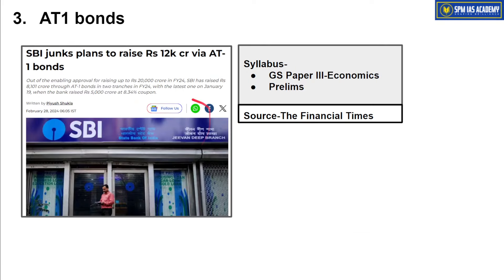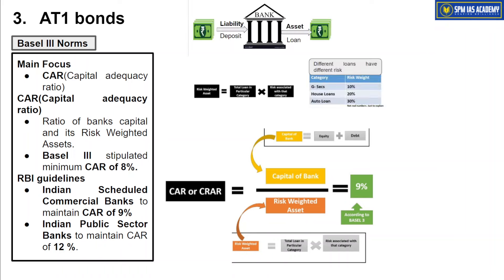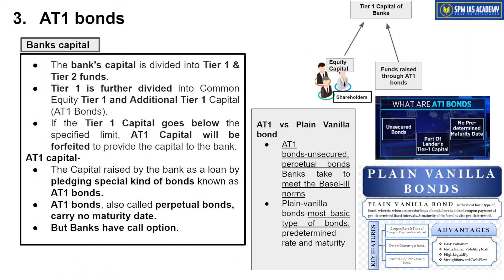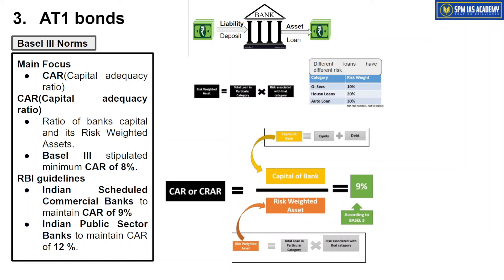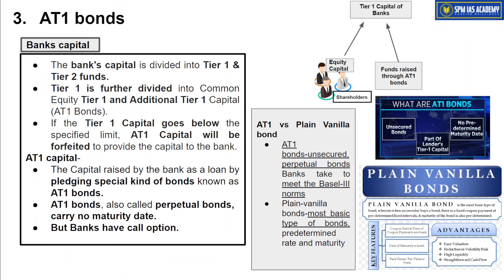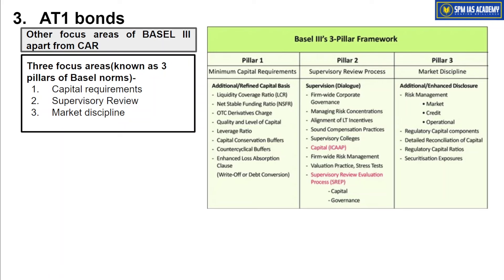Coming back to the current news: SBI had recently planned to raise ₹12,000 crore via AT1 bonds, but has now dropped that plan for the time being. Banks typically consider AT1 bonds or raising money from investors when their capital adequacy ratio targets are in danger of being missed. That is the news — not important from an exam perspective.